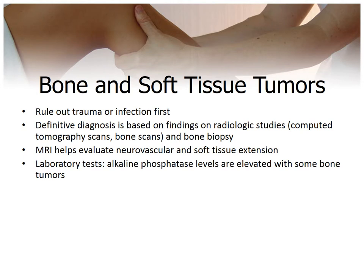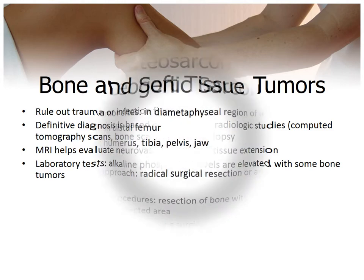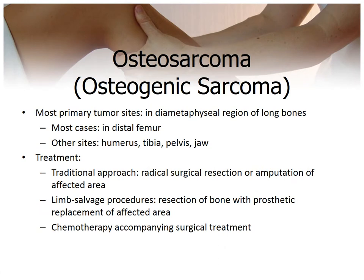Bone and soft tissue tumors — osteosarcoma and Ewing sarcoma — account for 90% of all primary malignant bone tumors in children. They occur more commonly in boys, with incidence highest during adolescence and peak incidence around age 15. Osteosarcoma specifically has peak incidence during the second decade of life, ages 10–20.